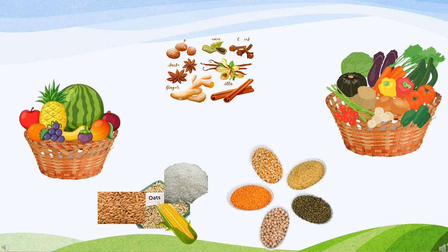For example, green peas and pulses are seeds of plants. Apple, banana, and pomegranate are the fruits of plants. Cauliflower and the flower of banana are flowers from plants. Sugarcane is a stem of plants. Cabbage and spinach are the leaves of plants. So we use different parts of plants to eat.